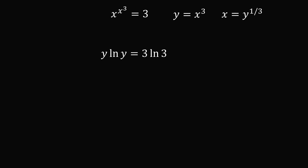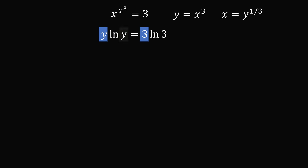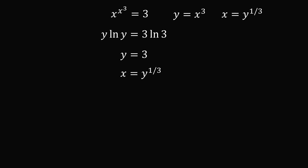Looking at this equation, we have a coefficient of y which matches 3, and an argument of y which also matches 3, so of course y is equal to 3. But if y equals 3, then x equals y to the power of 1 over 3, which means we have 3 to the power of 1 over 3, or the cube root of 3. So once again, x equals the cube root of 3 — and this is another way to solve this fun little equation.